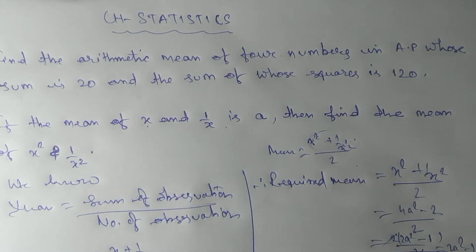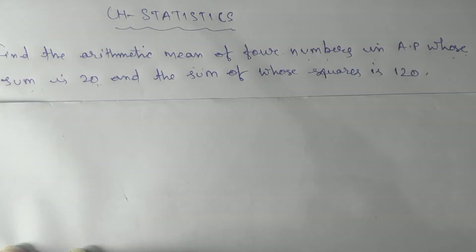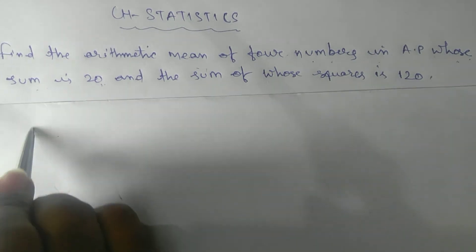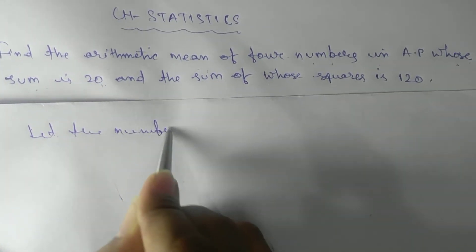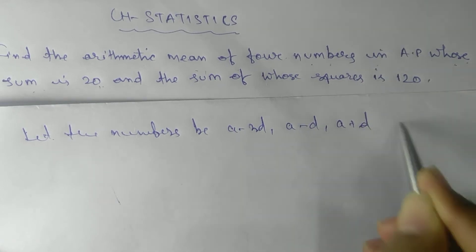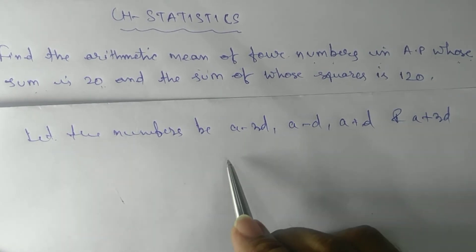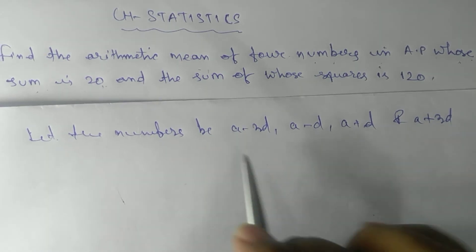Now for the first problem: the arithmetic mean of four numbers which are in AP. Since the numbers are in AP, we need to know about arithmetic progression to solve this. We let the four numbers be a−3d, a−d, a+d, and a+3d. Check the common difference — it remains constant.